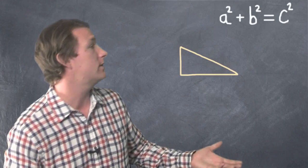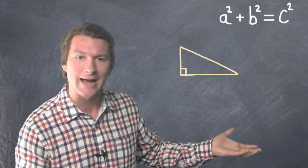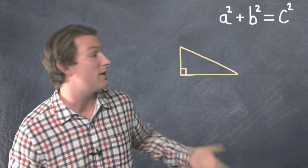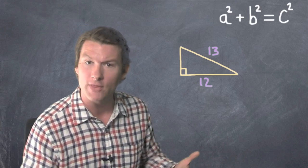Alright, let's get a right triangle up here. We know that this is a right triangle because one of the angles is 90 degrees. And I'll give you the hypotenuse. Let's say it's 13. I'll give you one of the legs. Let's say it's 12 and we're searching for that other leg. We'll call that a.